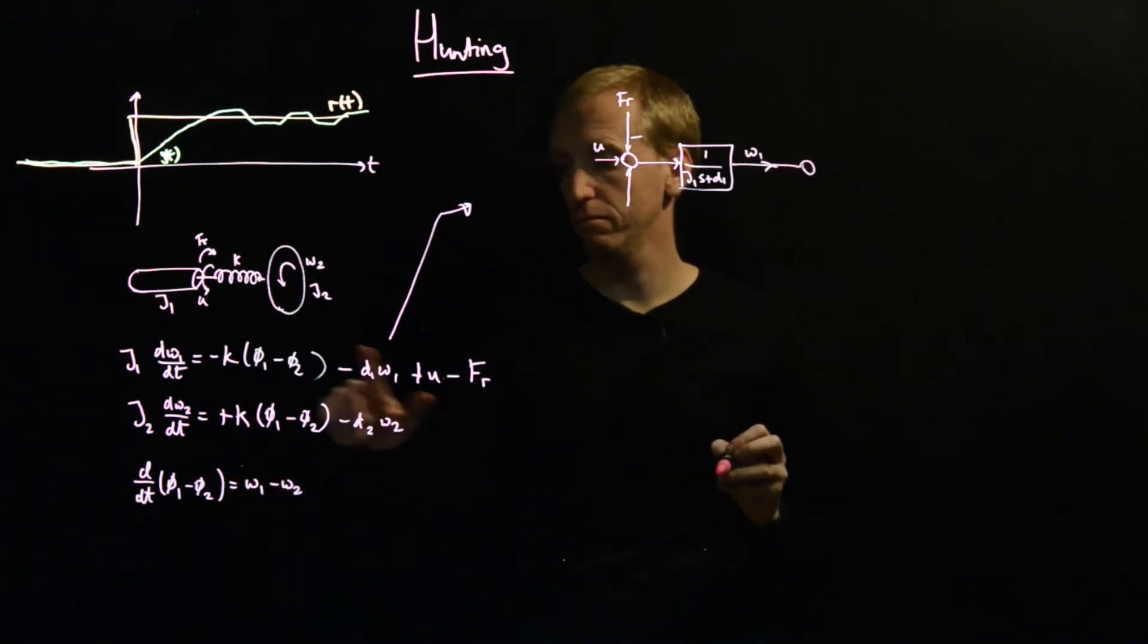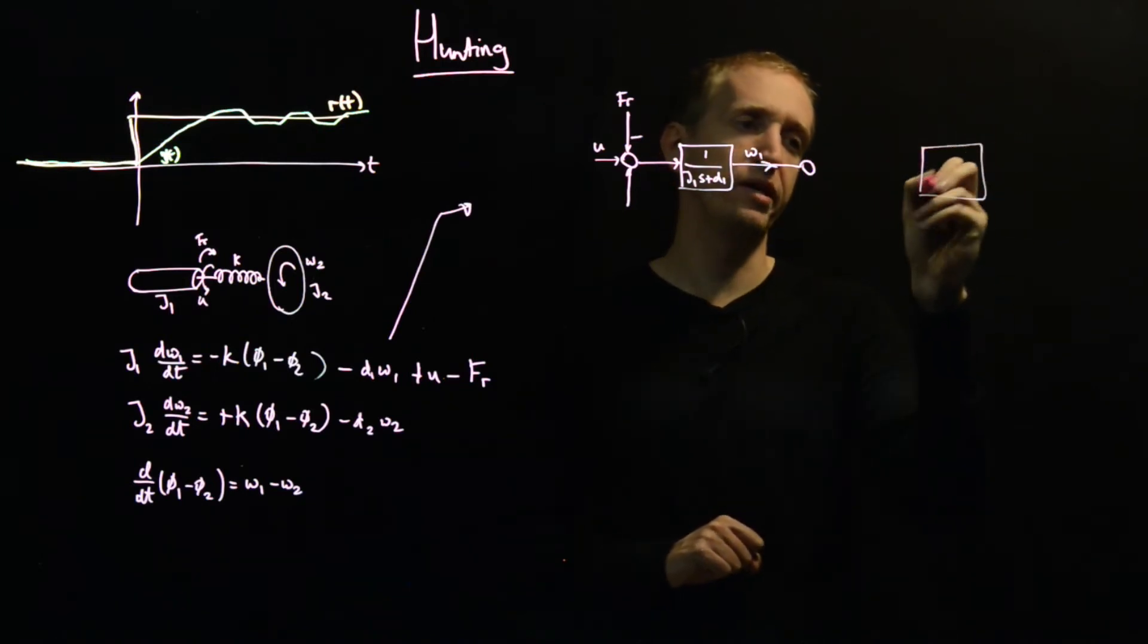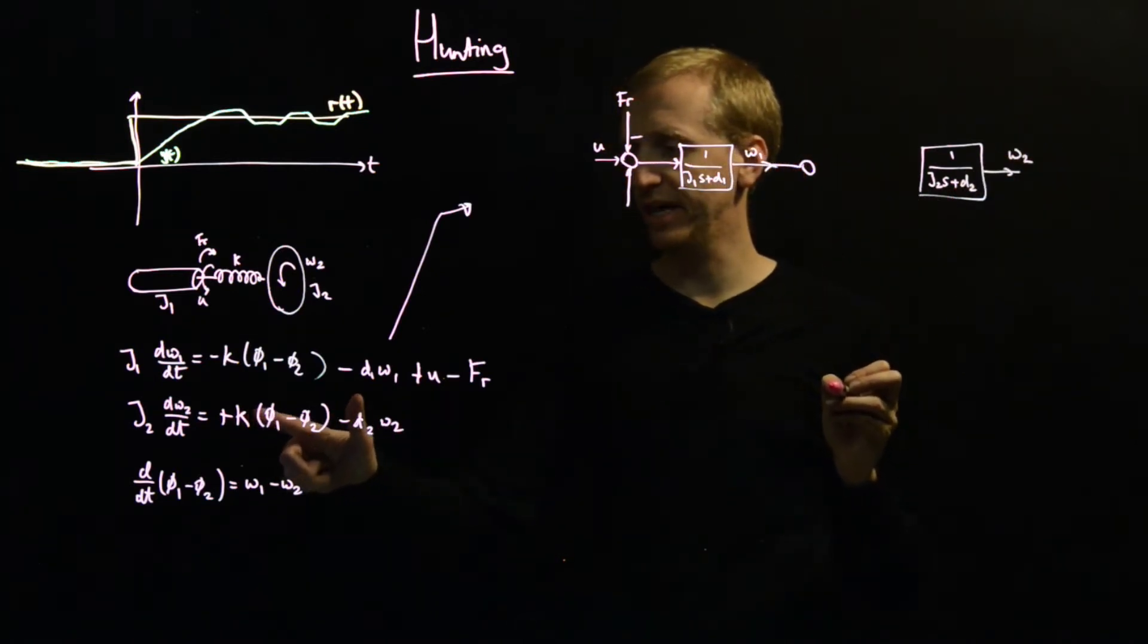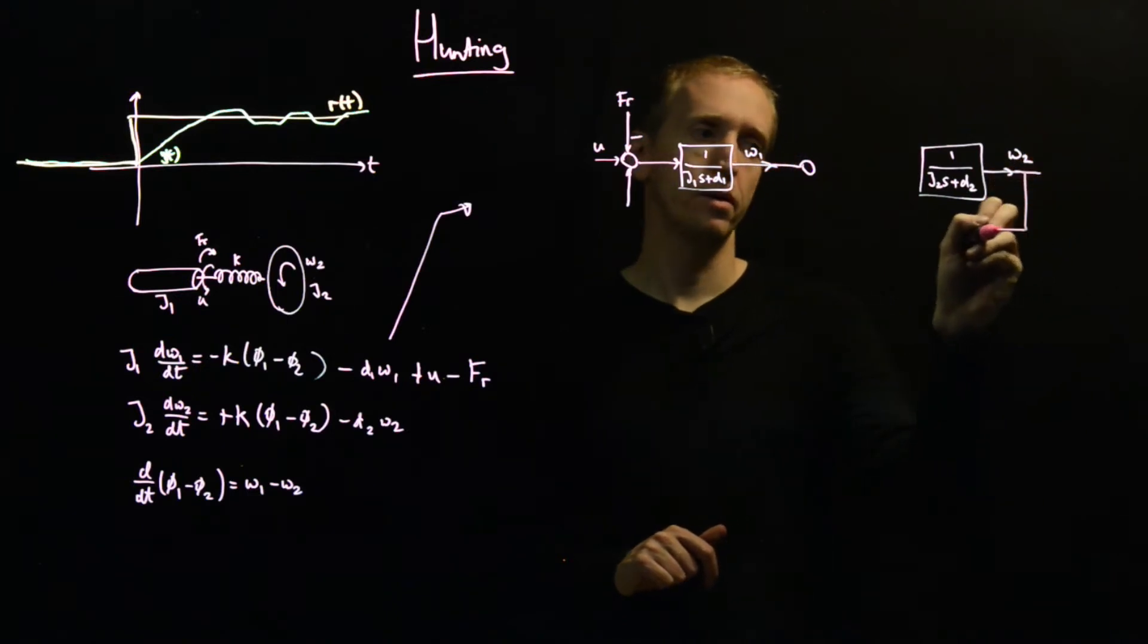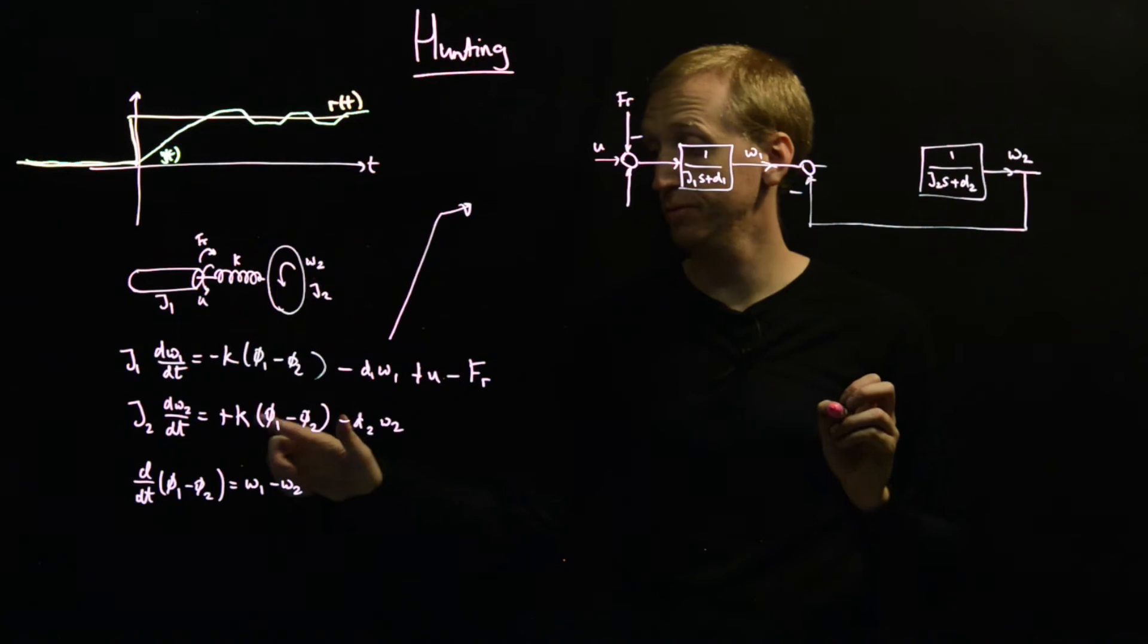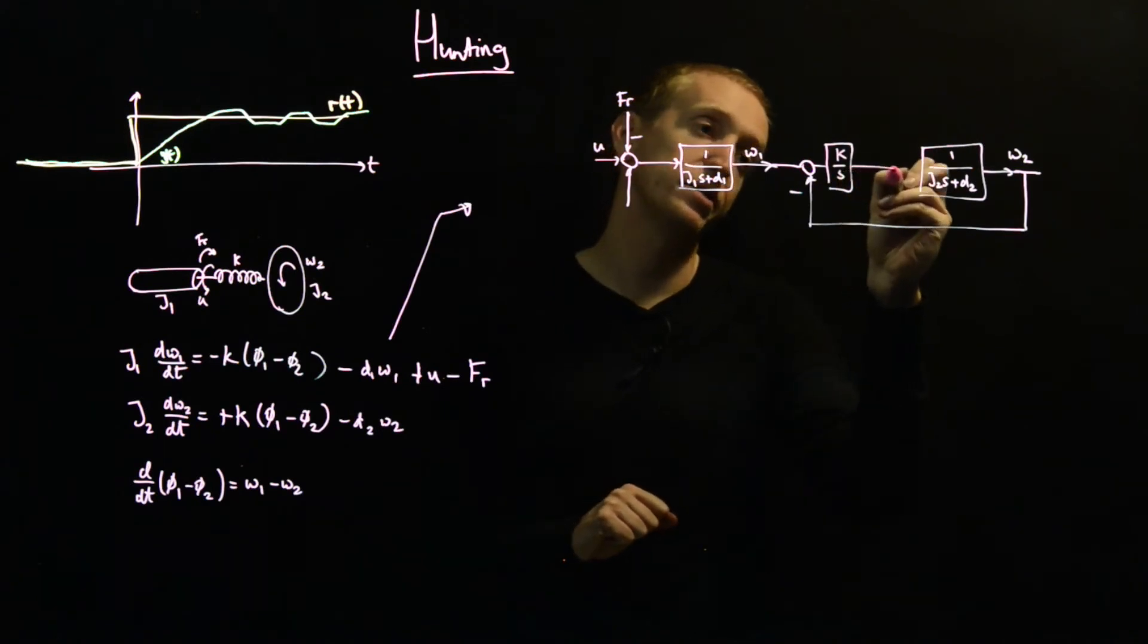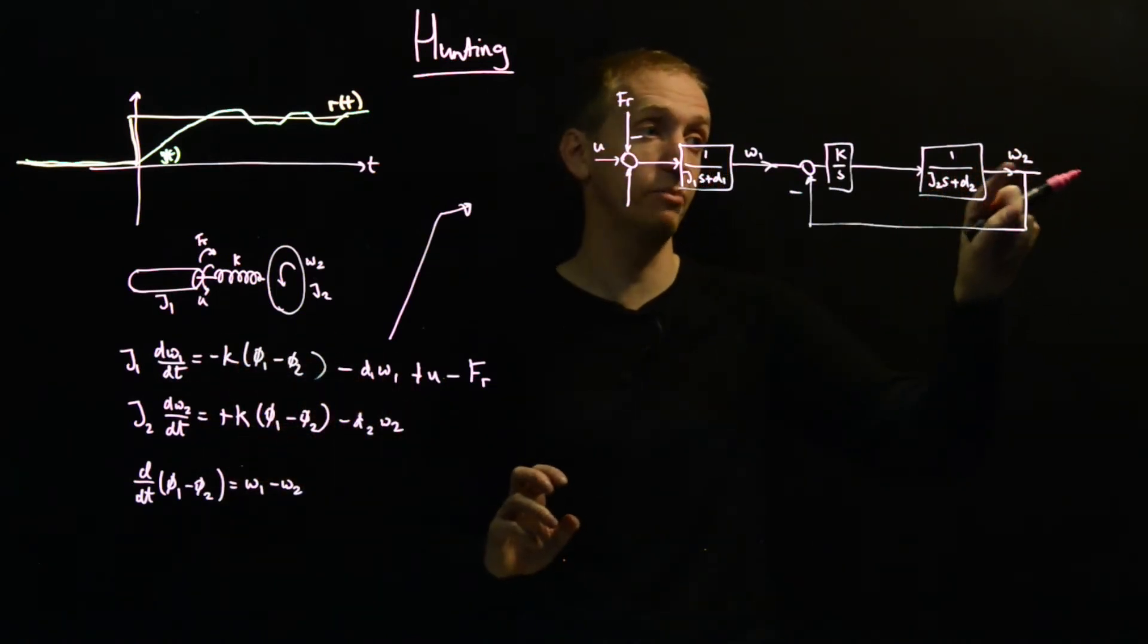And I'm just going to start drawing some more pieces. And we're now going to start trying to model the second load. And so we've got something similar going on here. We have a 1 over J2S plus D2. That's going to give us our omega 2. And then what's the input force? The input force is just this K phi 1 minus phi 2. So it's convenient to draw a little negative feedback here. So this signal now, this is omega 1 minus omega 2. So to get K phi 1 minus phi 2, we just have to put an integrator in. And scale it by the stiffness constant K. And this now gives us the input to our second mass here, to the load from which we can determine the angular velocity omega 2.